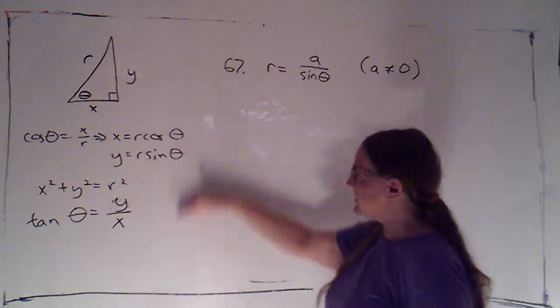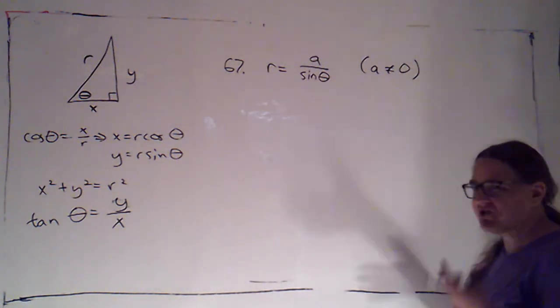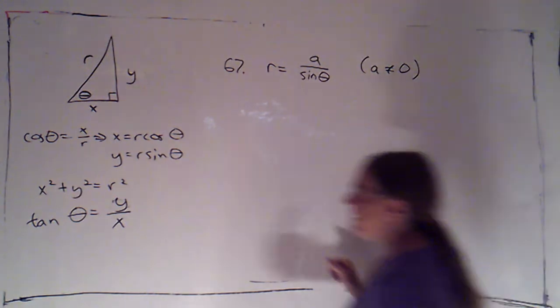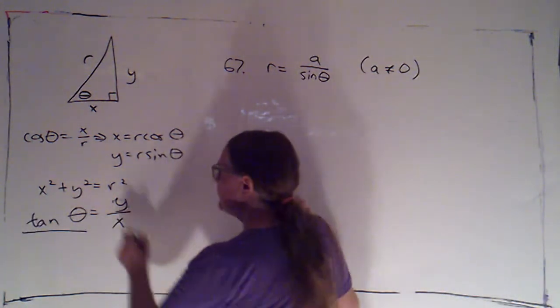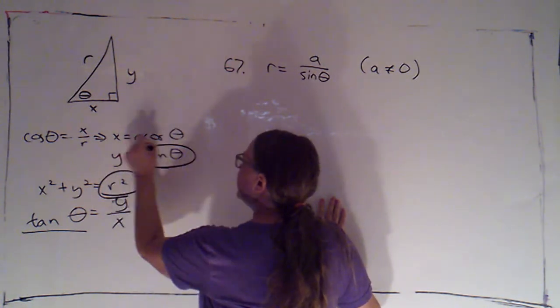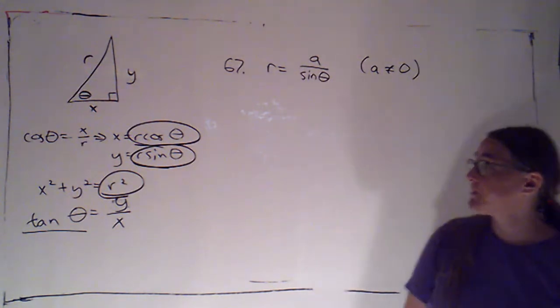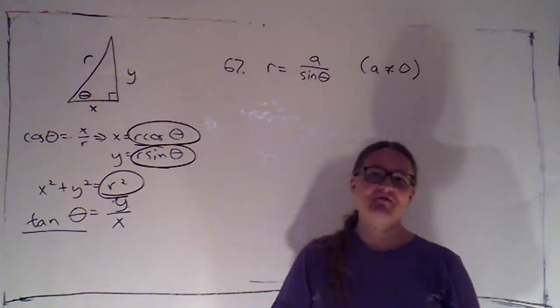Remember, these are the formulas that you can work with, so it's not particularly helpful to have just an r by itself. The expressions that it's useful to have are tangent of theta, or r squared, or r sine theta, or r cosine theta. Any of those four expressions you can replace with something in rectangular coordinates.